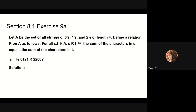Next, we will do problem 9a and 9b. Let a be the set of all strings of 0s, 1s, and 2s of length 4. Define a relation r on a as follows: for all s, t in a, s is in relation r with t if and only if the sum of the characters in s equals the sum of the characters in t. We need to determine if 0, 1, 2, 1 is in relation r with 2, 2, 0, 0. The sum of characters in 0, 1, 2, 1 is 0 plus 1 plus 2 plus 1, which equals 4. The sum of 2, 2, 0, 0 is 2 plus 2, also 4. So the answer is yes.